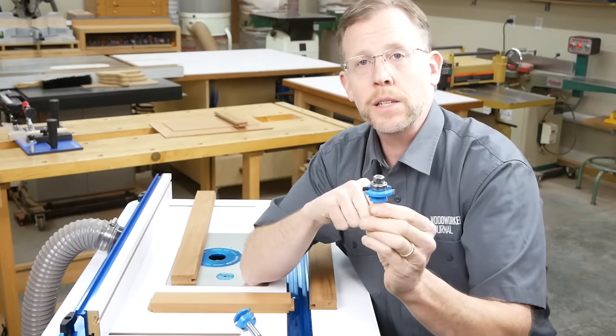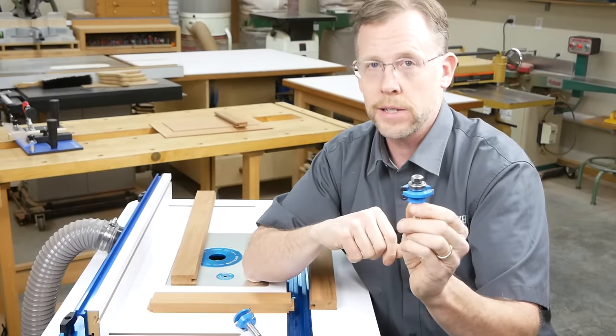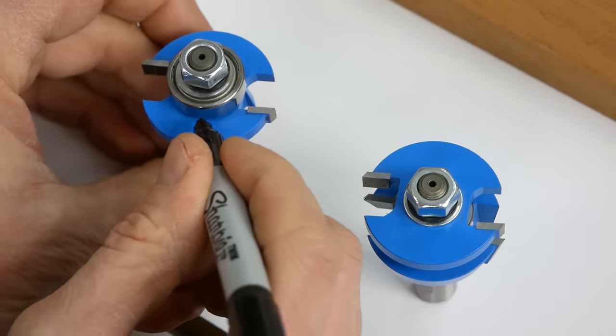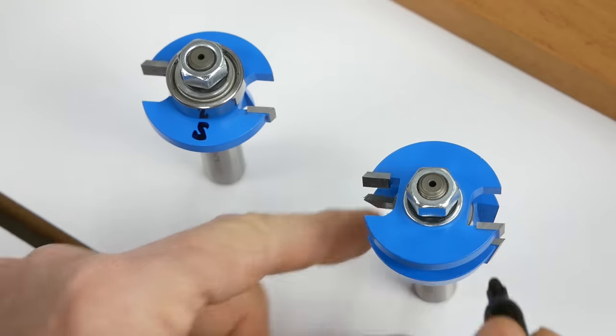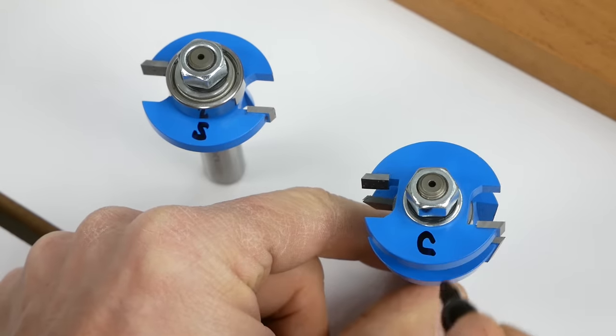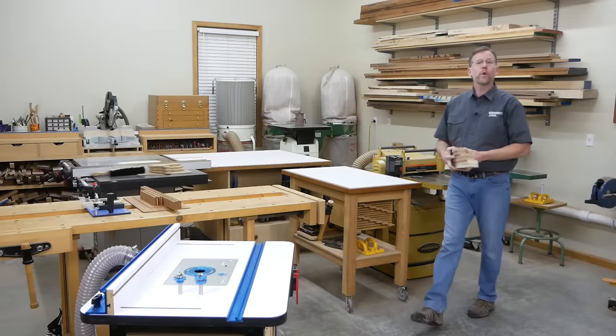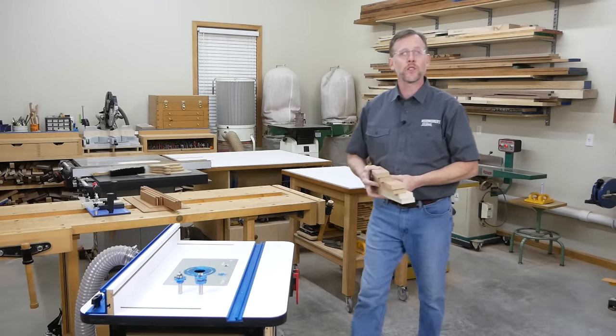To help keep things simple, I tend to call this a sticking cutter and not a style cutter. One way to keep the two straight, if you don't use them very often, is to mark the sticking cutter with an S and the coping cutter with a C, either on the coated part of the bit or on the bottom of the shanks. Now that we know which bit does what, we can get on with making the joints.